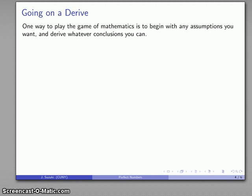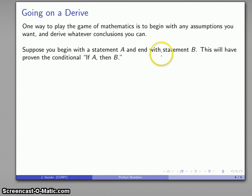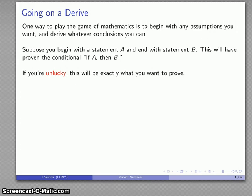Here's a different way of playing the game of mathematics. What we can do is begin with whatever assumptions we want and derive whatever conclusions we can in the hopes that something we find is going to be useful. Suppose I begin with a set of assumptions, I'll call those statement A, and I derive and I figure out whatever I find, and eventually I end up with my statement B. I started with my statement A, and assuming that my derivations were valid, that I use the proper rules of inference, I end up with my statement B. That is a proof. And what that tells me is that if I start at A, I can end with statement B, and I will have proven the conditional statement, if A, then B. With any luck, this will actually be a useful conditional. If you're lucky, you'll find something that's rather unexpected and potentially new.